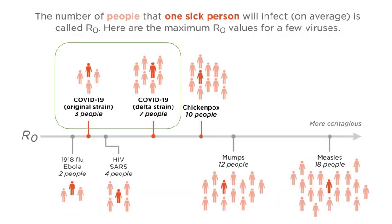R0 calculates the expected number of individuals who can develop disease when exposed to a single patient. In COVID, early versions had an R0 of two to three. The Delta variant was found to be much higher — around seven, meaning a single case can infect seven people. Omicron was even higher, estimated at more than 10. This illustrates that unprotected exposure is highly risky in COVID.